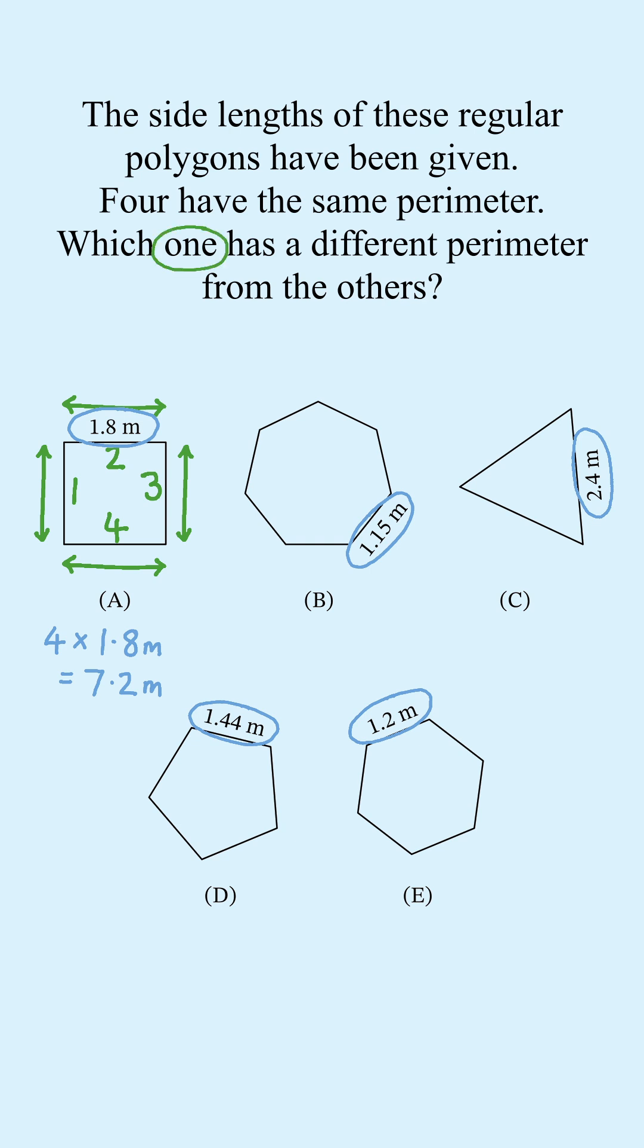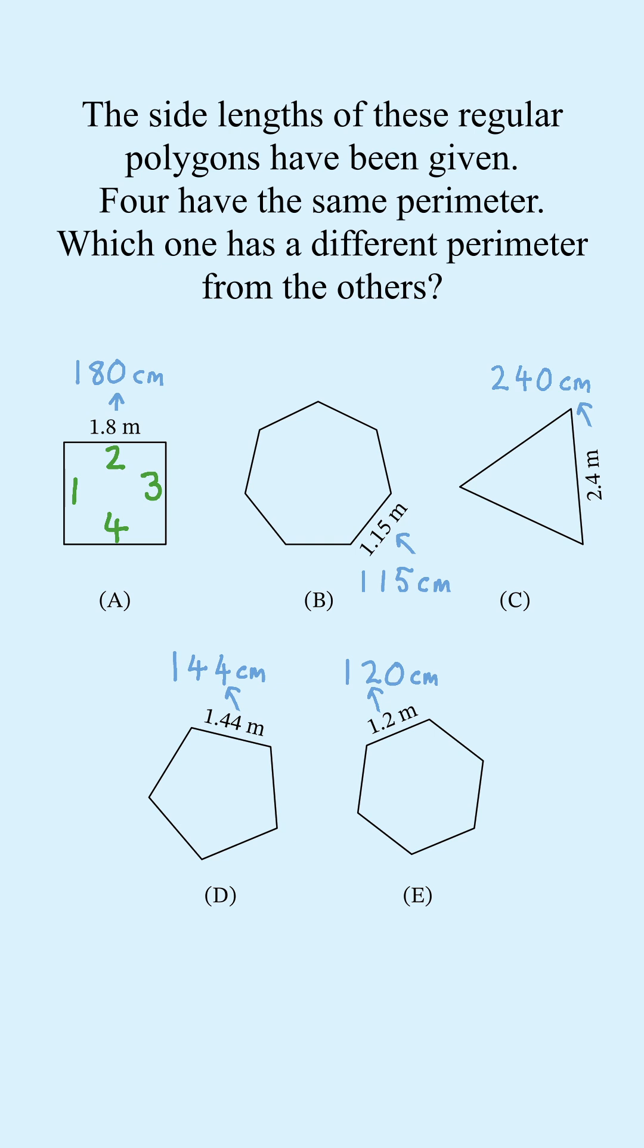Only one shape has a different perimeter, so let's work in centimetres to avoid decimals and just check the last digit in each case.